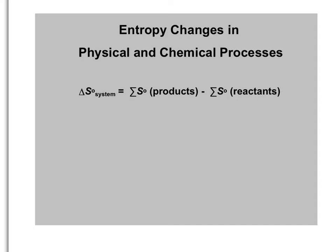This video is about looking at changes in entropy as systems go through physical and chemical processes. There are several different ways that we can look at and calculate changes in entropy. As you can see from the equation on this slide, this is very similar to a couple of other ones we've seen already, where the change in entropy of a system equals the summation of the entropies of the products minus the summation of the entropies of the reactants. This is the first method I want to talk about.